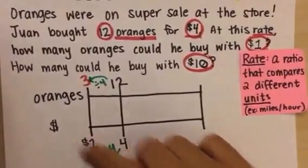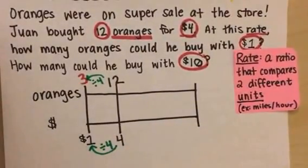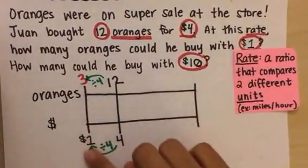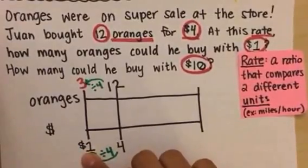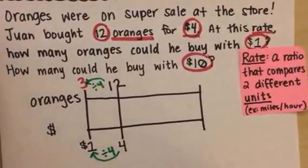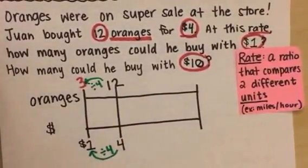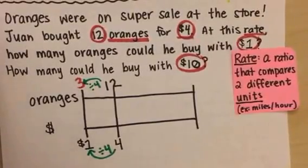12 divided by four is going to give me three, which means that he can buy three oranges for one dollar. So that's my unit rate, right? My unit rate is for every one dollar—my denominator of one—he can buy three oranges.